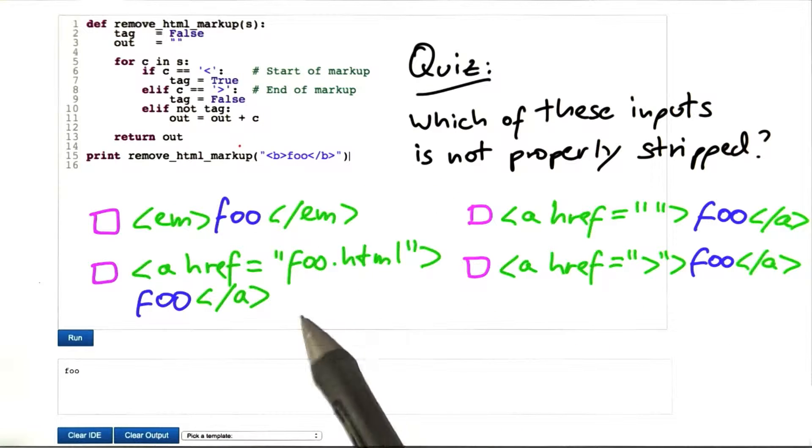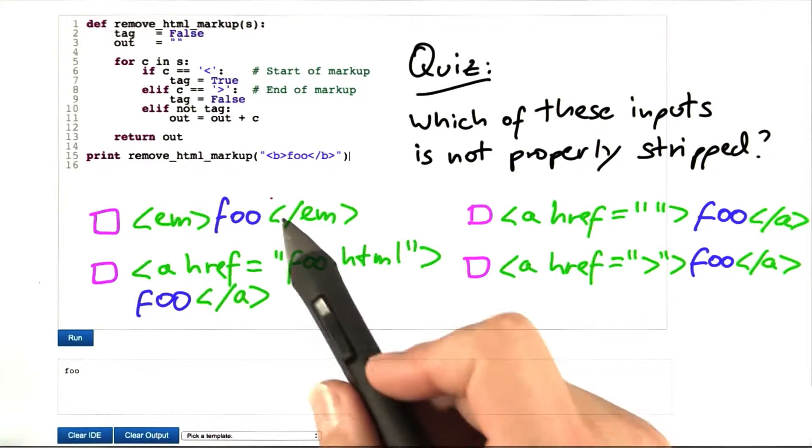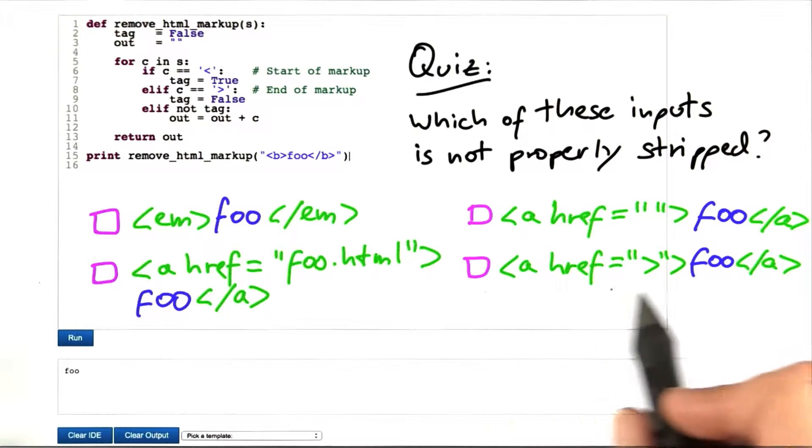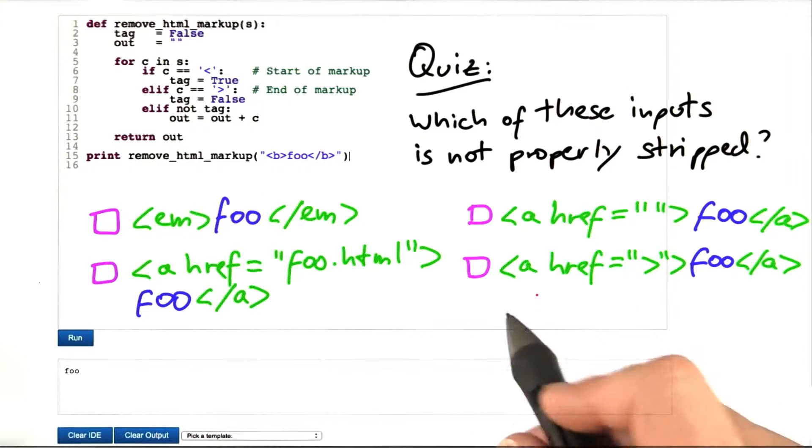If you remember how our program works going through the individual states of the finite state machine, you will find that this input is not processed correctly.